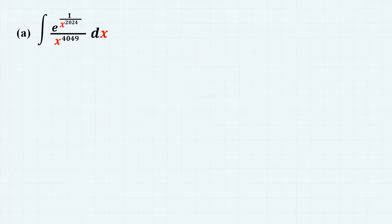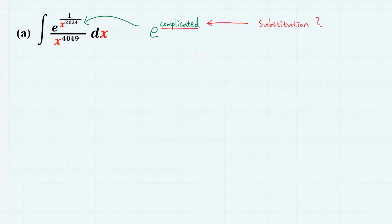So the first one. The first clue comes from the numerator. From experience, you might have realized that if there exists some complicated function in the exponent, then the integral becomes tricky. Therefore, perhaps we should use integration by substitution to simplify this exponent.